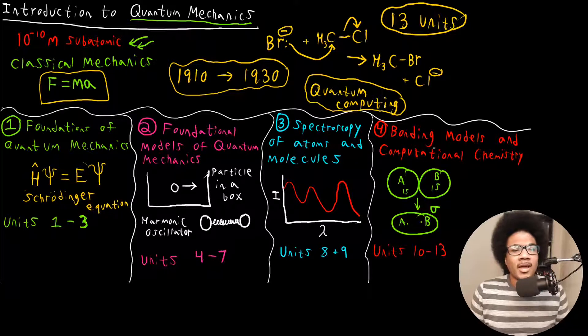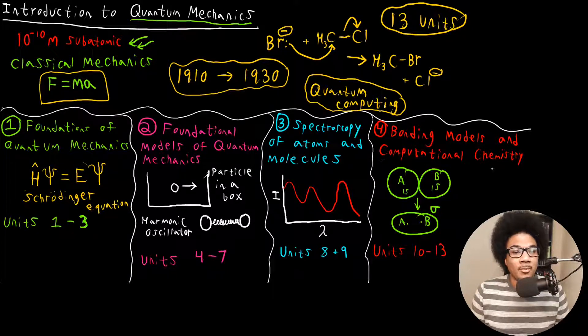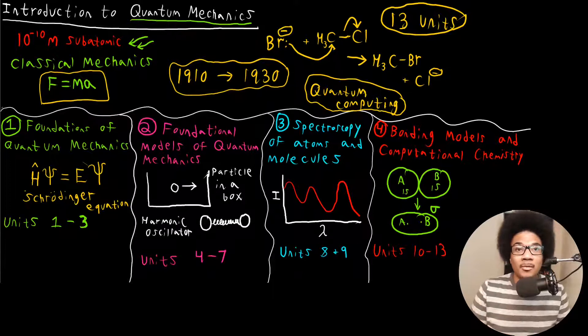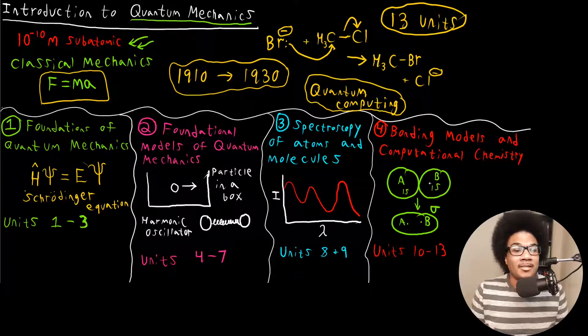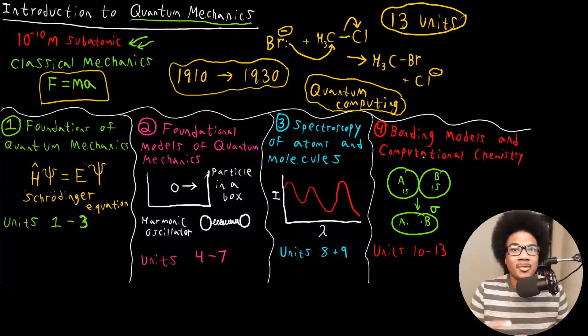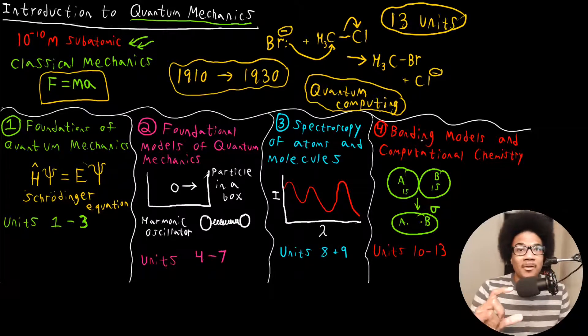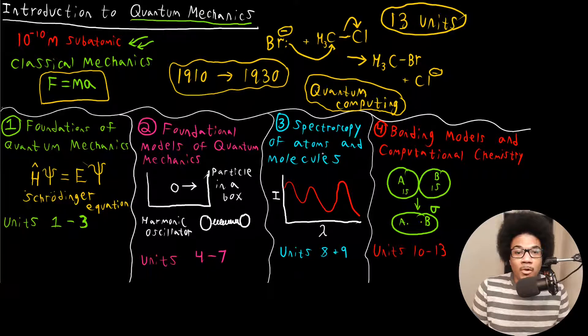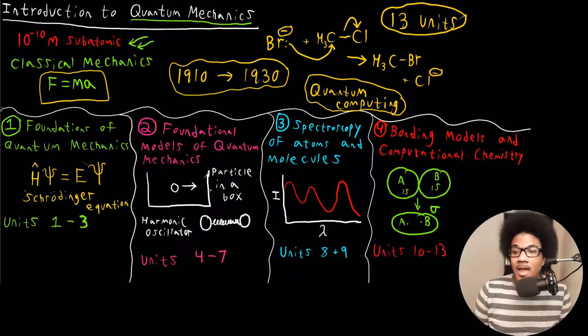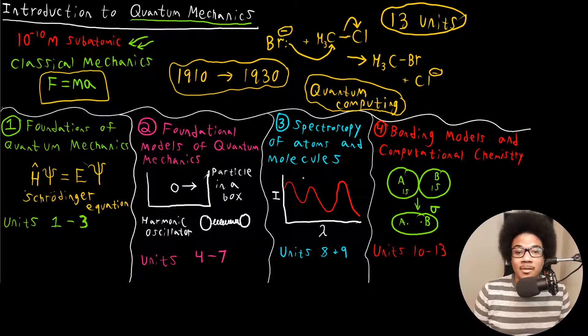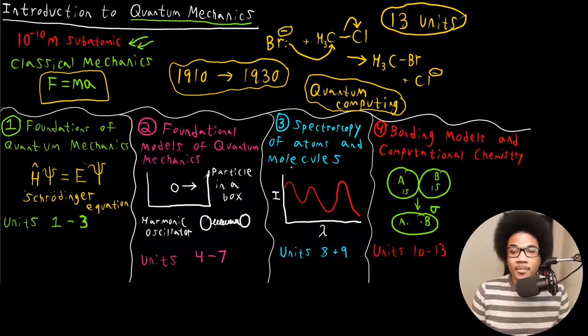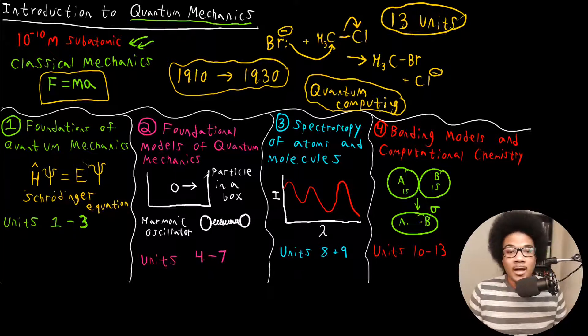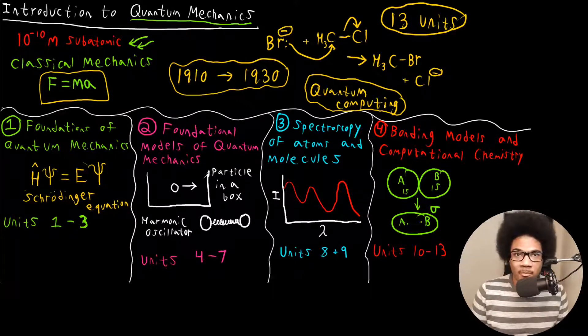And those models, especially MO theory, guides a field called computational chemistry where computational models are used to predict different properties of atoms and molecules. So we'll spend the last half of the class really looking at these bonding models and how they drive computational models for atoms and molecules. So these are really the four grand themes of this course and all the units fall under these different themes. So if this is interesting to you or if you're in the class, then hopefully this gives you a good overlay of what we're going to learn this semester, what will be covered in the units for this course.